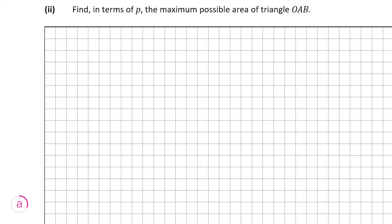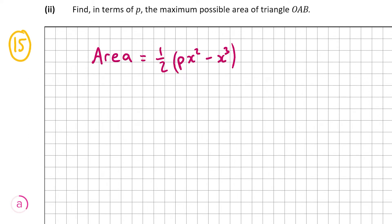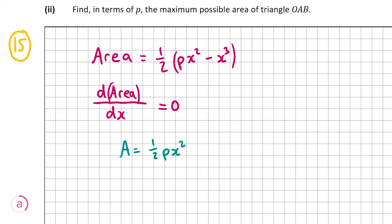Now we're moving on to A part 2, which is worth 15 marks. This asks us to find, in terms of p, the maximum possible area of triangle OAB. From A part 1, the area is equal to half times px squared minus x cubed. To find the maximum possible area, I'm going to differentiate the area with respect to x and put that equal to 0. Letting A represent the area and multiplying out the bracket, A equals half px squared minus half x cubed.